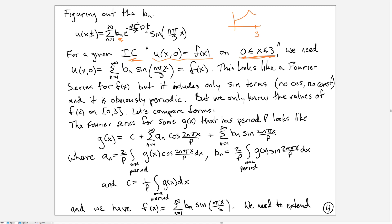So we plug in t equals 0 up here, and that gives us an expression u(x,0) equals the infinite sum of b_n multiplied by sin(nπx/3), and that we want to be equal to f(x). Now this looks a lot like a Fourier series, and in fact I've written a general form of a Fourier series for some function g(x).